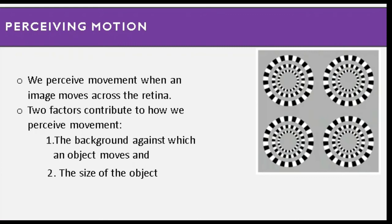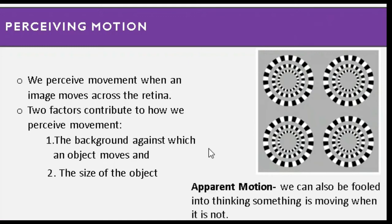Perceiving motion: we perceive movement when an image moves across the retina. Two factors contribute to how we perceive movement — the background against which an object moves, and the size of the object. We also have apparent motion, where an image appears to move even though it technically does not. We can be fooled into thinking something is moving when it is not.